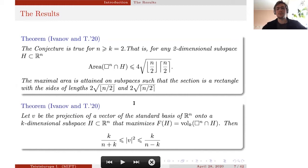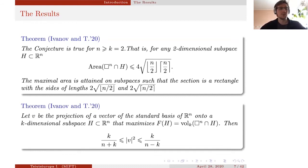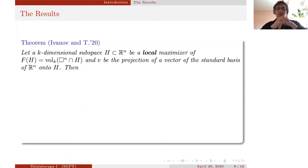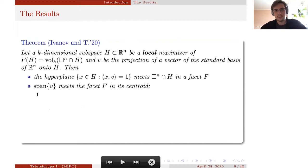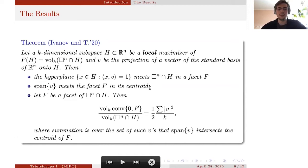I'll also show that if vector v is a projection of a standard basis vector of R^n onto a k-dimensional subspace, then the square of its length is bounded by two specific values, and explain why we should think in terms of projections of basis vectors onto the k-dimensional subspace. I'll also describe the local conditions for a local maximizer — such a hyperplane meets the polytope (the section of the cube) in its facet, and this line meets this face in its centroid.